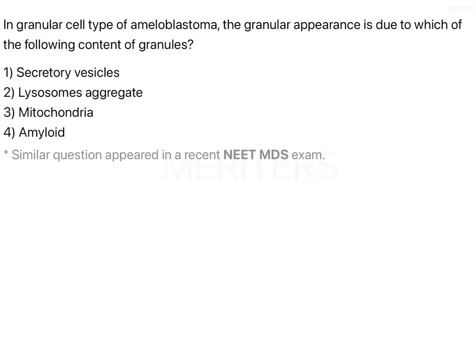What you need to remember about ameloblastoma is that there are certain key features common to all variants. You will have tall columnar cells with a basement membrane, and the nucleus is placed away from the basement membrane. In most normal situations the nucleus is closer to the basement membrane, but this reversal of polarity is a hallmark feature seen in ameloblastoma.